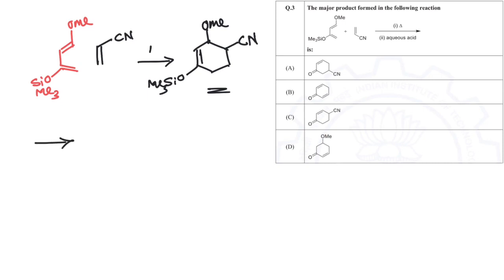After the formation of this product, it is again treated with aqueous acid. So this is the step one product. Now step two is the treatment with aqueous acid on the product of step one. What will happen then?